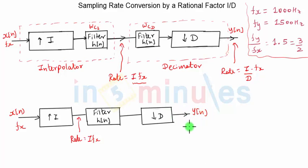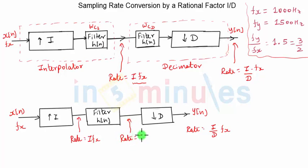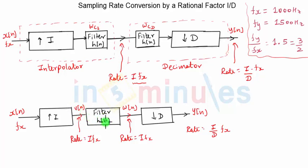The final output y(n) has a rate equal to (I/D)·fx. The rate at the input and at the output of the interpolator block is I·fx. Let's name the output of the interpolator block as v(n) and the output of the filter as w(n). So x(n) is interpolated to v(n), and v(n) passes through the filter to ensure there are no images due to interpolation.